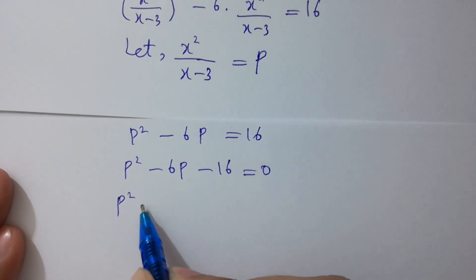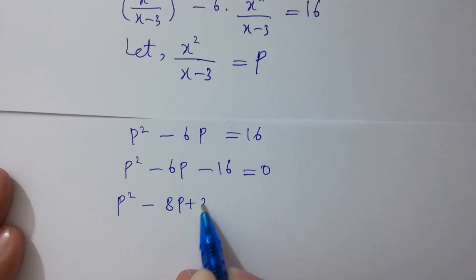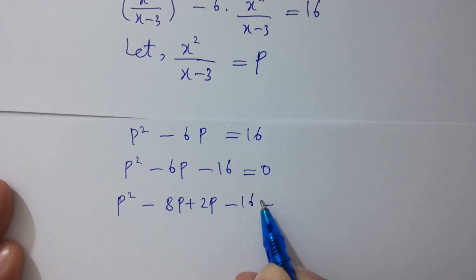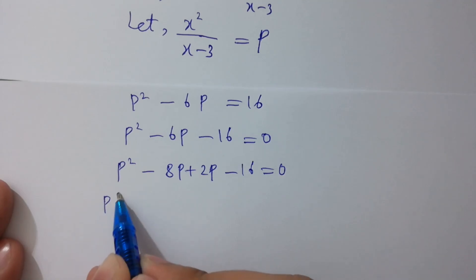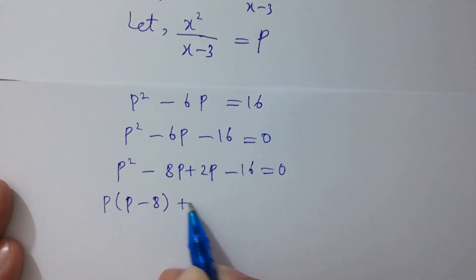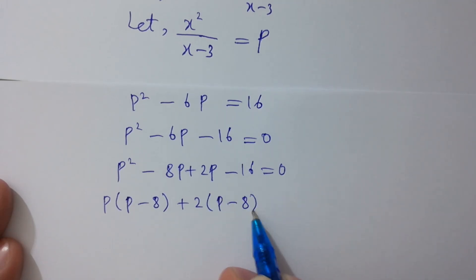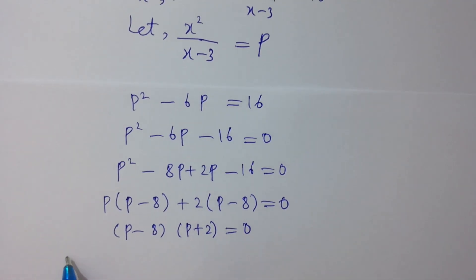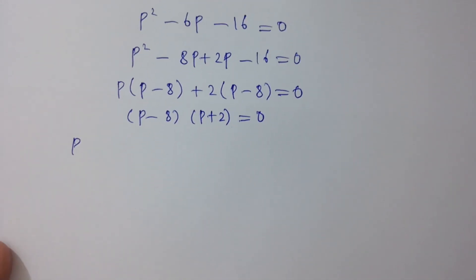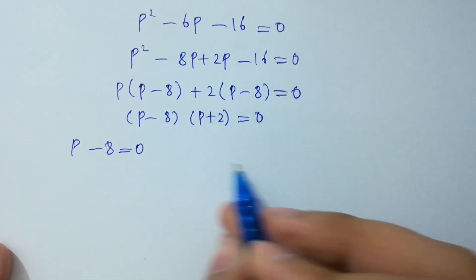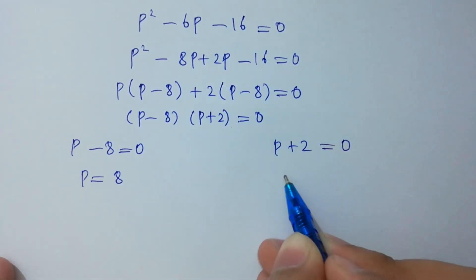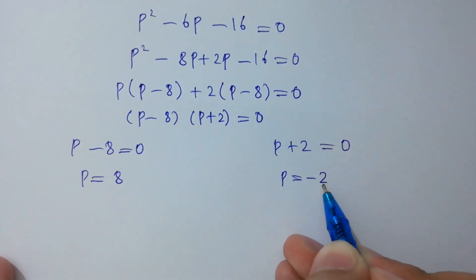Factoring: p² minus 8p plus 2p, because minus 8 plus 2 equals minus 6. So (p minus 8)(p plus 2) equals 0. Either p minus 8 equals 0 or p plus 2 equals 0, giving p equals 8 and p equals minus 2.